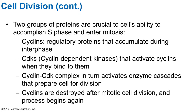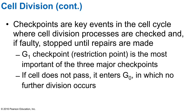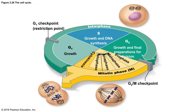Two groups of proteins are crucial to the cell accomplishing the S phase and entering mitosis: cyclins and CDKs, or cyclin-dependent kinases. Cyclins are regulatory proteins that accumulate during interphase. CDKs activate cyclins when they bind to one another. The cyclin-CDK complex in turn activates enzyme cascades that prepare the cell for division. Cyclins are destroyed after mitotic cell division, and then the process starts all over again.